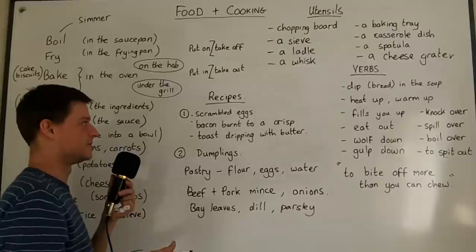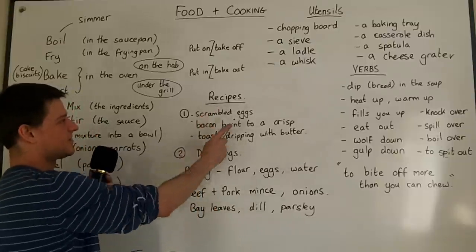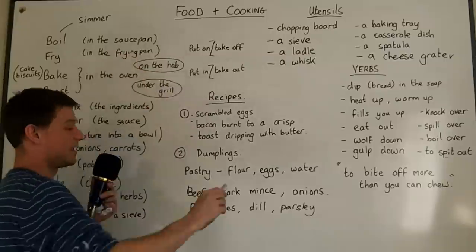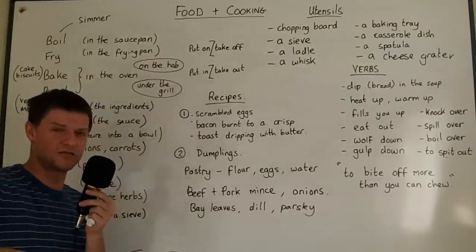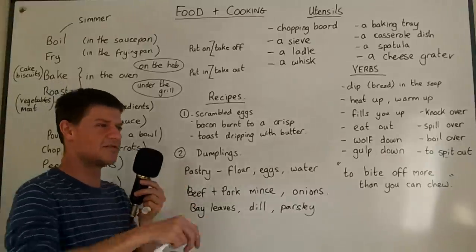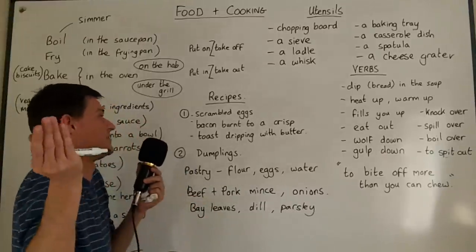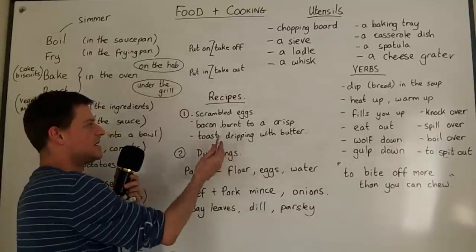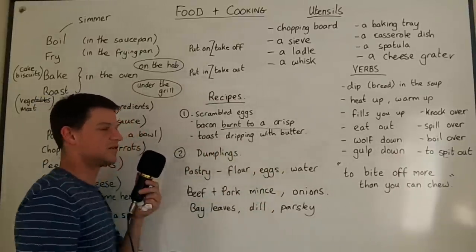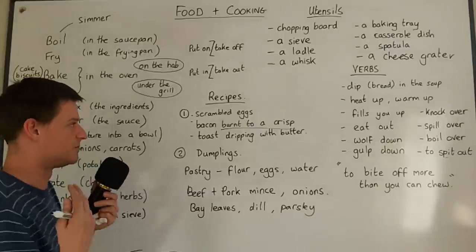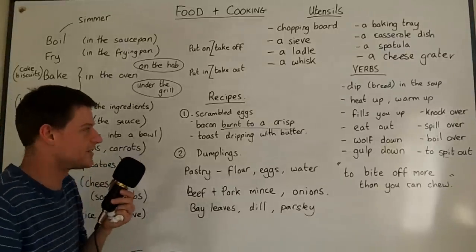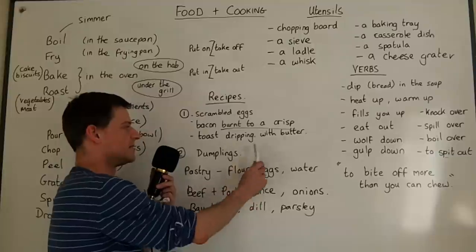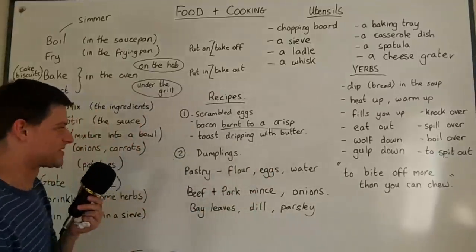Now for some recipe vocabulary. For breakfast, scrambled eggs are eggs that have been mixed on the frying pan into a kind of mixed-up mixture — not fried or boiled, which would be the other two ways. You can have bacon burnt to a crisp, which means very very burnt — some people like it that way. And you can have toast dripping with butter, meaning it's covered in loads and loads of butter.